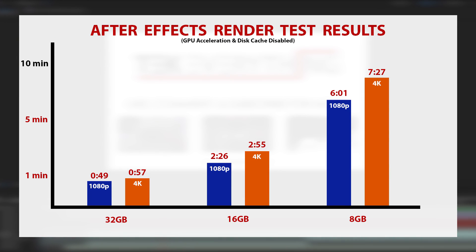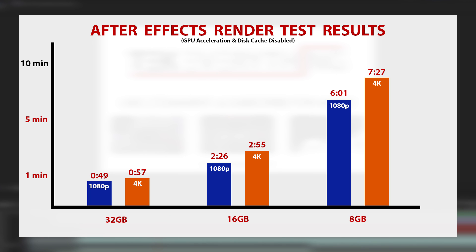Taking a look at the results for the After Effects render test, you will see that — coming at no surprise — the 32 gigs did way better than the 16 and 8 gig, with 8 gig coming in a distant last at 727 seconds for the 4K clip test. That is forever for a 10 second clip. The 16 gig test was not bad — about three times as slow as the 32 gig test. Keep in mind you can drop all these times dramatically by using GPU acceleration, a cache disk, or both.